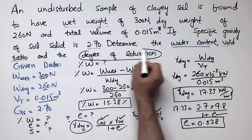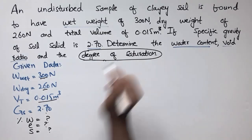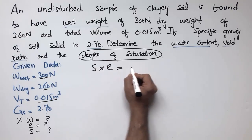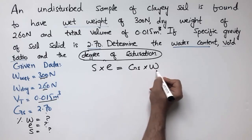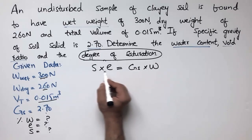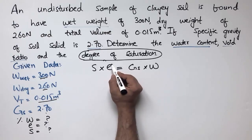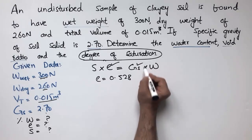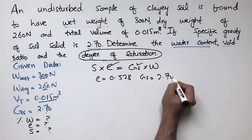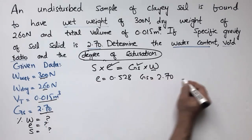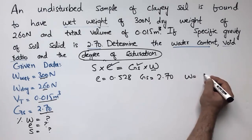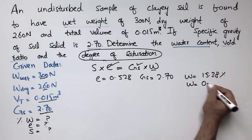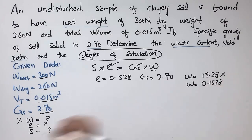Now we have to find the degree of saturation. To find it, we use the equation: S × e = Gs × w, a very famous equation. The void ratio E = 0.528 is known, Gs = 2.7 is given, and the water content w = 15.38% — but we use it in decimal form as 0.1538.